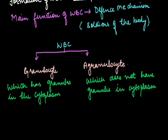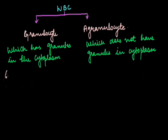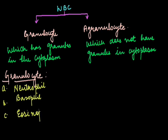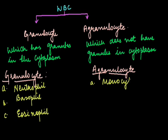The granulocytes are divided into three types: first is neutrophil, second is basophil, and third is eosinophil. Agranulocytes are of two types: monocyte and lymphocyte.